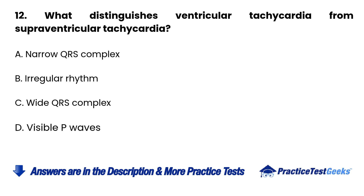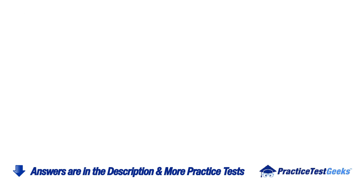12. What distinguishes ventricular tachycardia from supraventricular tachycardia? A. Narrow QRS complex. B. Irregular rhythm. C. Wide QRS complex. D. Visible P waves.